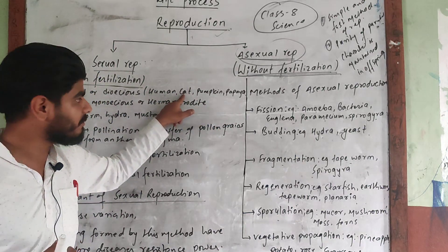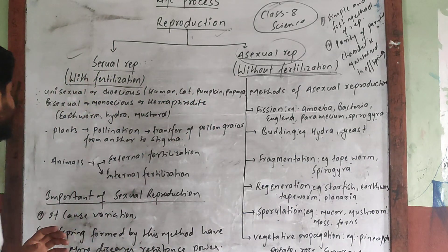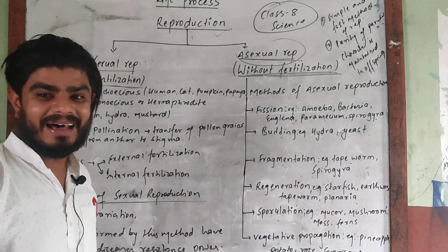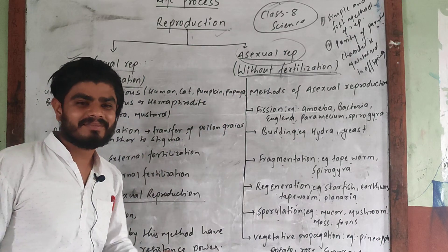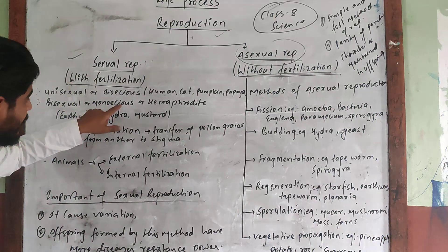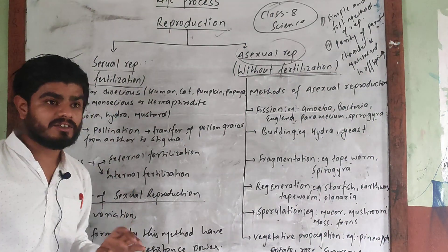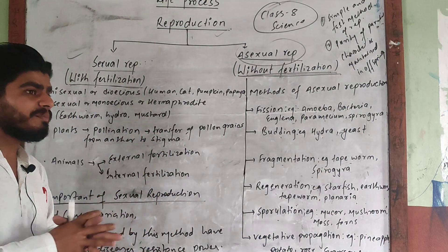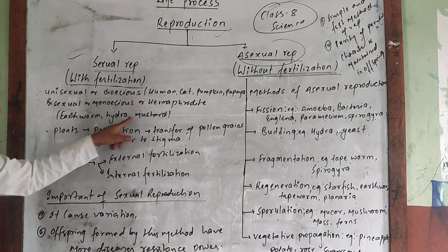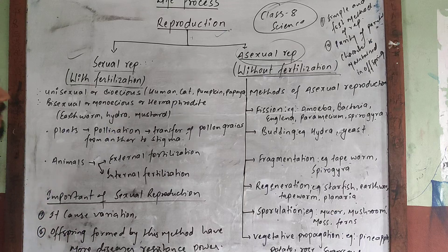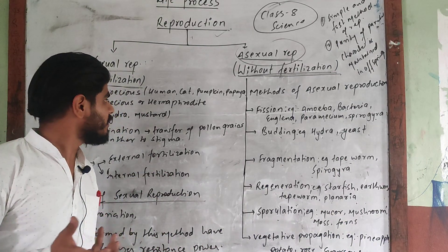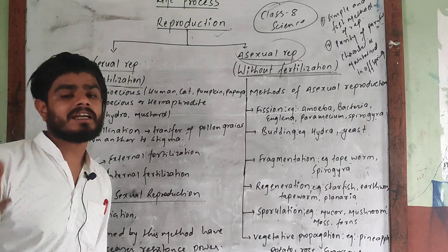The woman is a living animal, and pumpkin and papaya are plants. It is also known as monoecious or hermaphrodite. In this case, both sex organs are present. For example: earthworm, hydra, and mustard. Hermaphrodite animals are animals where both sex organs are present.